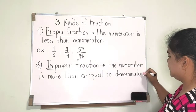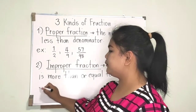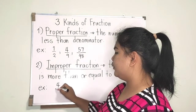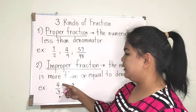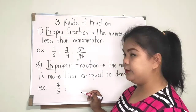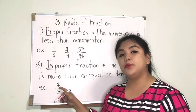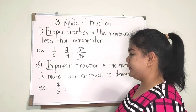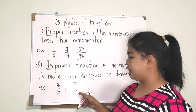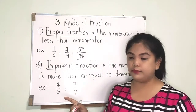For example, four thirds — the number on top is bigger than the number on the bottom, so the numerator is more than the denominator. Another example is seven over seven — they are the same, and it is also called an improper fraction.